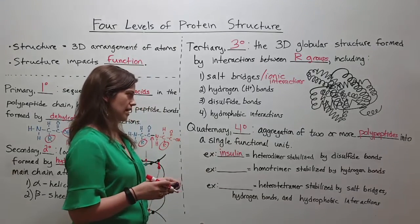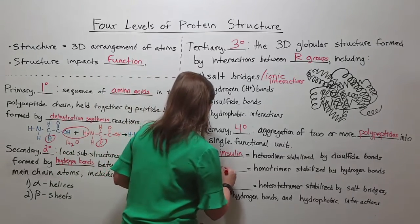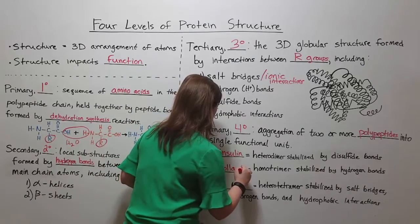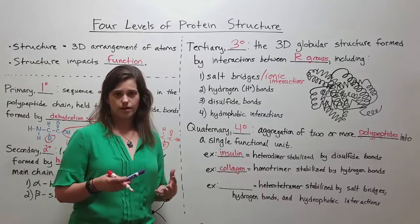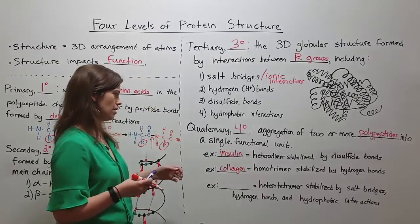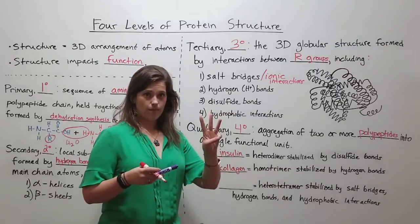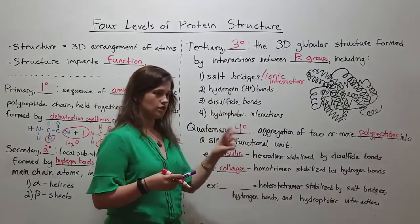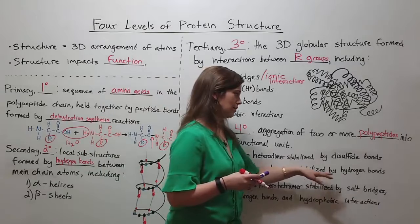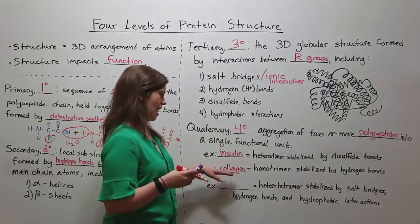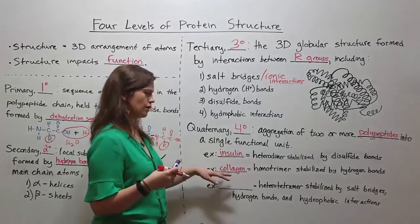Our next example is a protein you've also probably heard of: collagen. Collagen is important for the tensile strength and flexibility of our skin. Collagen is a homotrimer — trimer because it's three polypeptides, homo because those three polypeptides are the same. Three identical polypeptide chains stabilized by a large number of hydrogen bonds actually form a triple helix structure, and that's what collagen looks like.